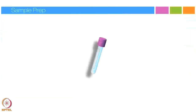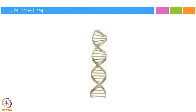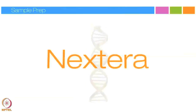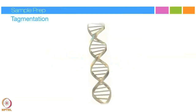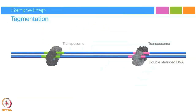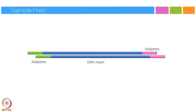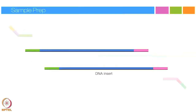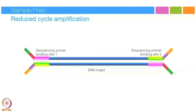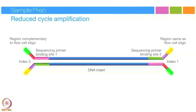Sample preparation begins with extracted and purified DNA. The first step in Nextera sample preparation is tagmentation. During tagmentation, transposomes simultaneously fragment and tag the input DNA with adapters. Once the adapters have been ligated, reduced cycle amplification adds additional motifs such as the sequencing primer binding sites, indices, and regions complementary to the flow cell oligos.